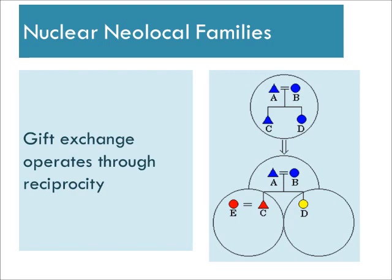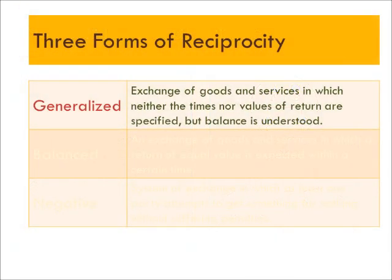Gift exchange builds bonds through relationships of reciprocity. There are three basic forms of reciprocity. First, there's generalized reciprocity — the exchange of goods and services in which neither the time nor value of return are specified, but some kind of balance is understood. In generalized reciprocity, I will give, and although I will not specifically demand a return gift or expect a gift of the same kind back, I know that the bonds of giving will work out in the long run.